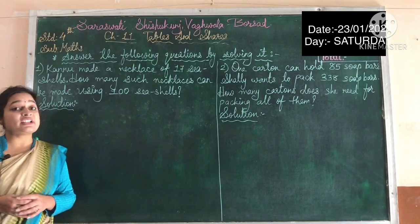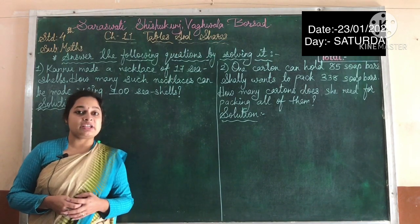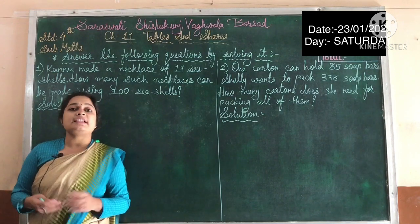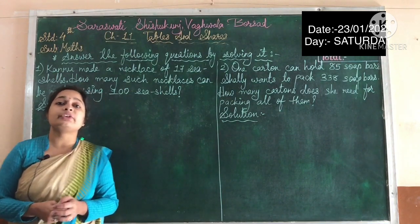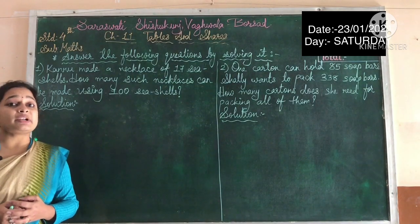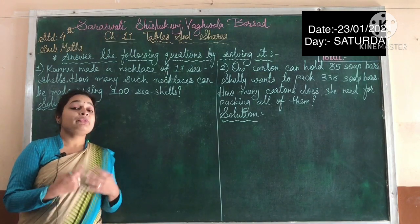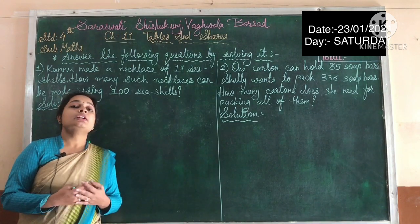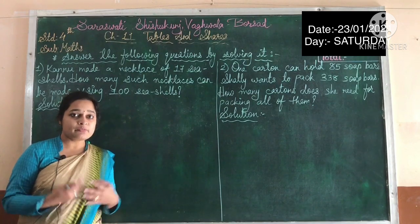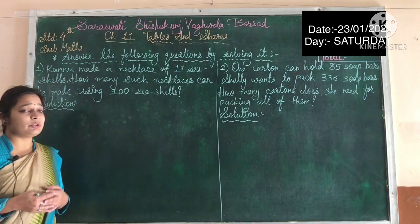As you all know, we are still going on with chapter number 11, Tables and Chairs. Today we will see word problems with the repeated subtraction method. We have already seen repeated subtraction in second standard and in third standard also, in the division chapter. So let us try to solve the word problems.